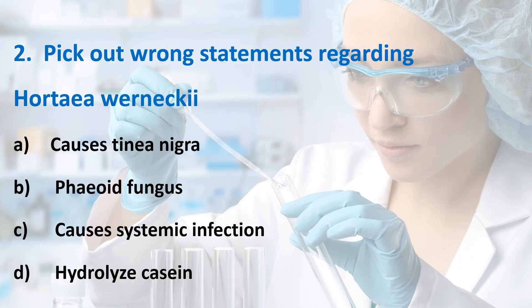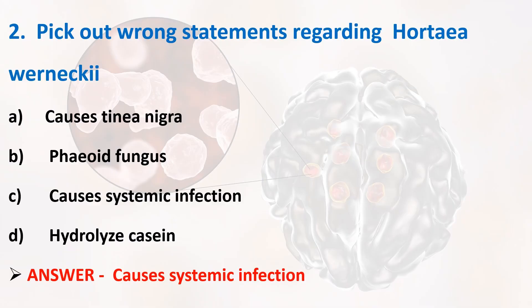Second question: Pick out the wrong statement regarding Hortaea werneckii. Options: it causes Tinea nigra; it is a phaeoid fungus; it causes systemic infection; it hydrolyses casein. Answer is Option C — causes systemic infection — which is the wrong statement. Hortaea werneckii does not cause systemic infection; it causes superficial infection.